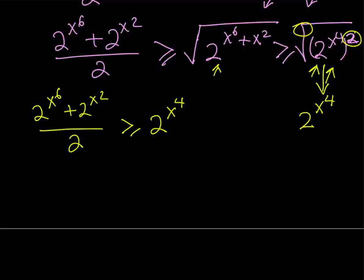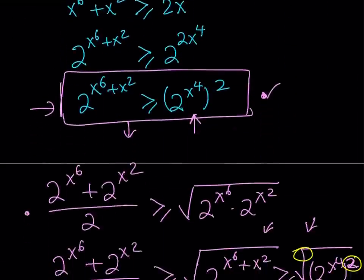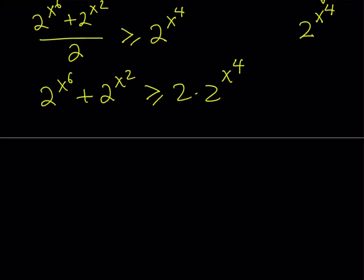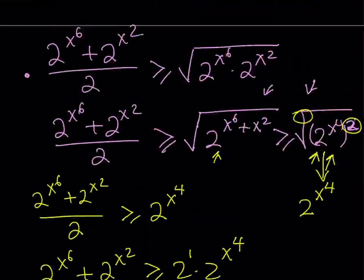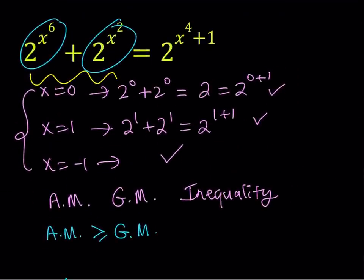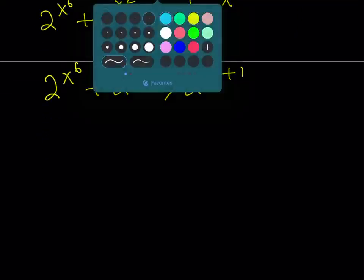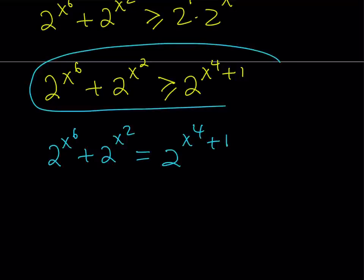This gives us something nice because the left-hand side of this inequality matches the left-hand side of our original equation divided by two. Multiplying both sides by two gives us: 2 to the power x to the sixth plus 2 to the power x squared is greater than or equal to 2 times 2 to the power x to the fourth. Since these are powers with the same base, we add exponents and get 2 to the power x to the fourth plus 1. But our original equation says this equals 2 to the power x to the fourth plus 1 — so we have an equality where AM-GM gives an inequality.